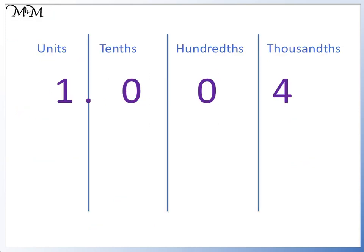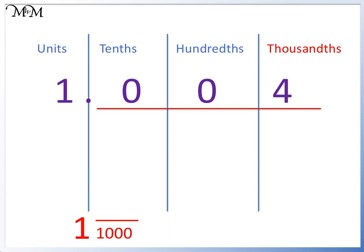Question 4: 1.004. We can write down the whole number straight away, which is 1. The decimal ends in the thousandths column, so the denominator will be 1,000. Reading across from the decimal point, we have the number 4, so we have 4 thousandths. Our answer is 1 and 4 thousandths. To take this a step further, both numerator and denominator can be divided by 4, to give 1 over 250.